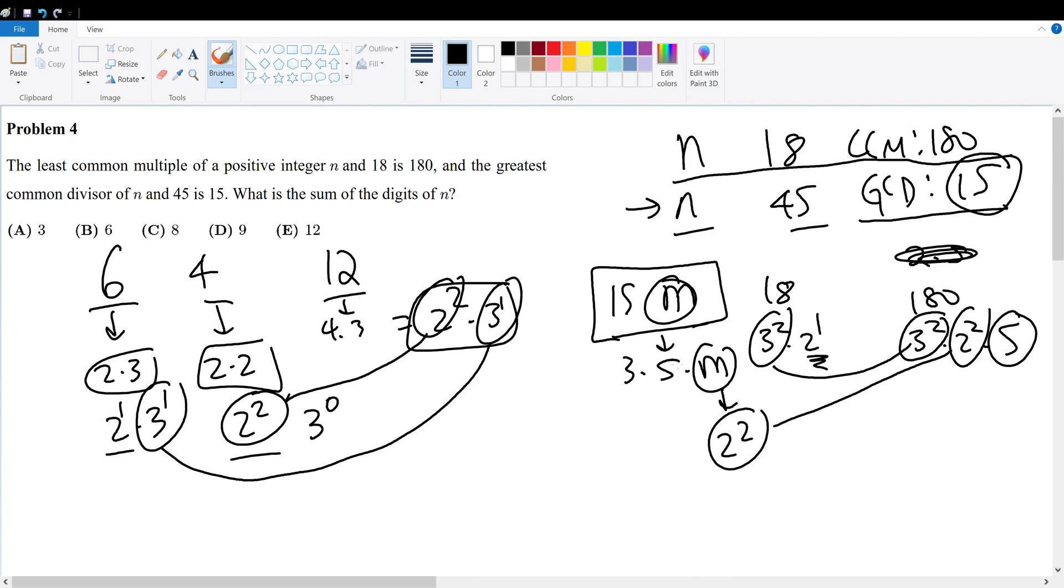What about the 5? The 5 is already present within 15. And the 3 gets ignored because the largest power of 3 is within 18. Therefore, we have our number. n is 3 times 5 times 4, which equals 20 times 3, which is 60. 6 plus 0 gives 6. Therefore, your answer choice is answer choice B.